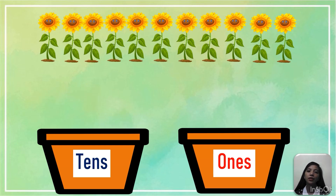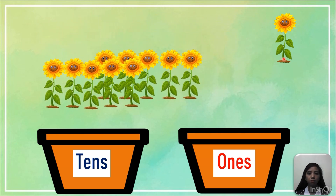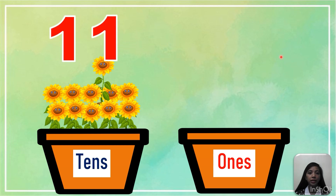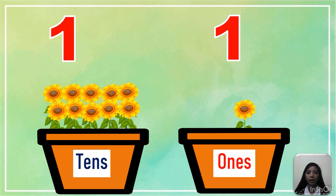Let's try this one. Let's count: 1, 2, 3, 4, 5, 6, 7, 8, 9, 10, 11. So there are 11 sunflowers. We will put the 10 sunflowers into the 10s place. How about the 1 sunflower? So we have 11 sunflowers — 1 in 10s place. Again, the rule says there is only a 1-digit number in each place. So we are going to move the 1 sunflower to the 1s place.